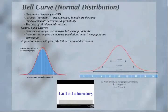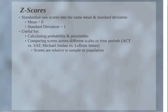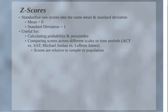Based on the bell curve, we can use this to calculate probability — the possibility of a particular score occurring. We do this by using z-scores. Z-scores standardize raw scores into the same mean and standard deviation. This is law for z-scores: they will always have a mean of 0 and a standard deviation of 1. Get this ingrained in your memory.